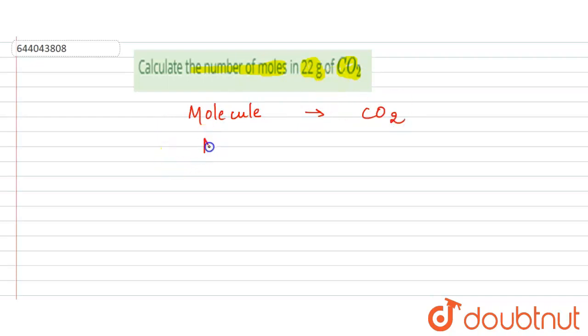Here we are given the mass, that is 22 grams, and we have to find the number of moles. So number of moles is equal to given mass upon the molecular weight.